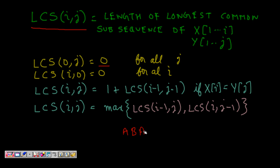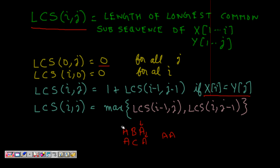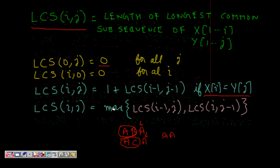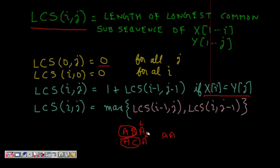Now let's look at the recursive case. Say we have strings a b a and a c a; the LCS is 'a a'. With one pointer at position i and another at j, if x[i] equals y[j], then LCS(i, j) = 1 + LCS(i-1, j-1). This means we've found a match and add 1 to the LCS of the shorter prefixes, demonstrating optimal substructure.